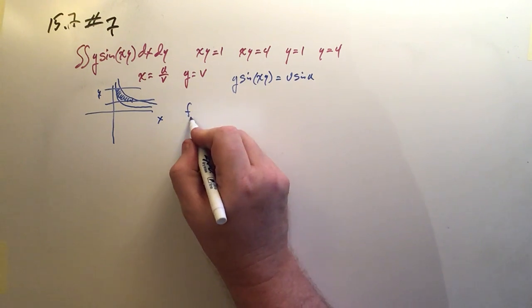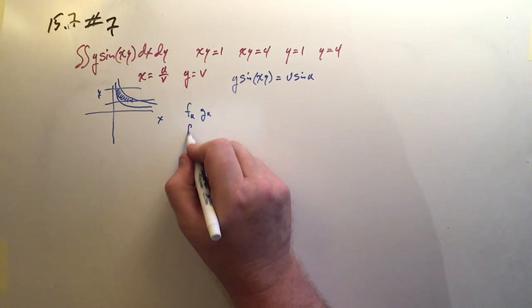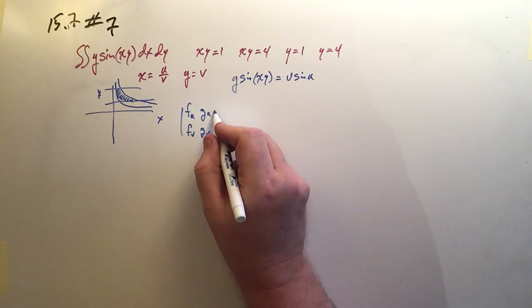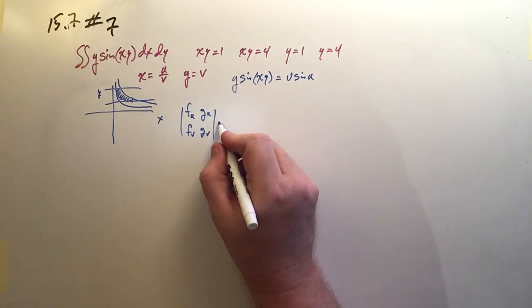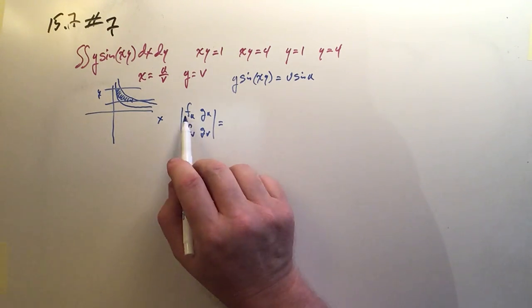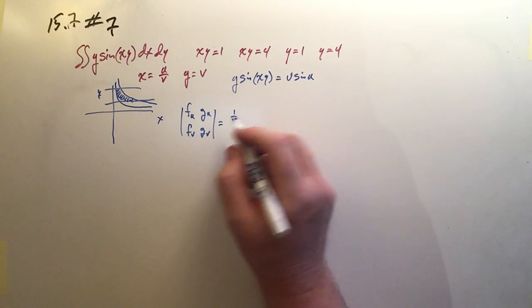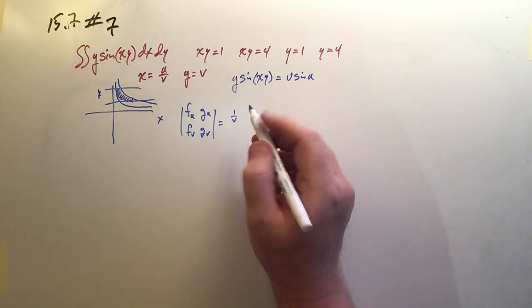So remember, it's going to be f_u, g_u, f_v, g_v. And we want the two-by-two matrix of that absolute value. So what are these? Well, f_u, that's just 1 over v. And then g_u is 0.